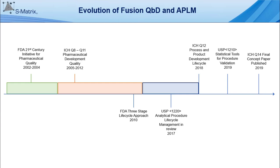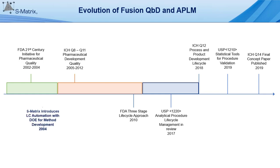S-Matrix actually released its first QBD software program for Windows in the mid-1990s. In 2002, S-Matrix began an initiative sponsored by a major international pharma company to automate LC robustness testing. This project culminated with the release of a commercial product in 2004, providing LC method development automation with integrated design of experiments methodology.